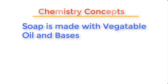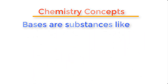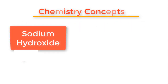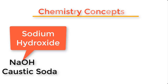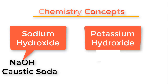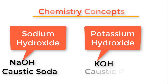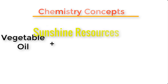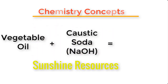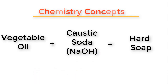Before we go into the production proper, let me explain some basic concepts about soap making using vegetable oils. In chemistry, bases are substances like sodium hydroxide with the chemical formula NaOH, also called caustic soda. Another base is potassium hydroxide with the chemical formula KOH, also called caustic potash. When you react vegetable oil with caustic soda, that is sodium hydroxide, you will get a hard soap.